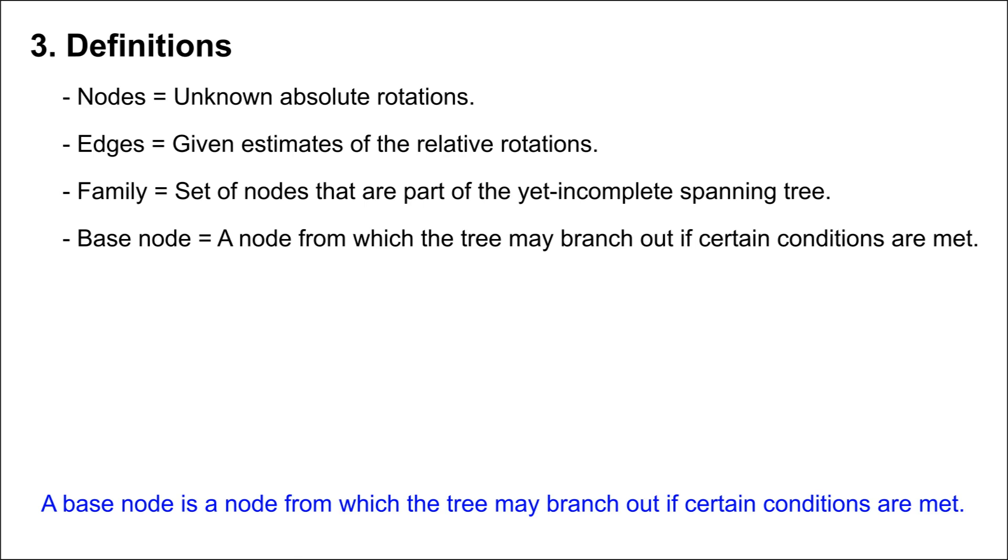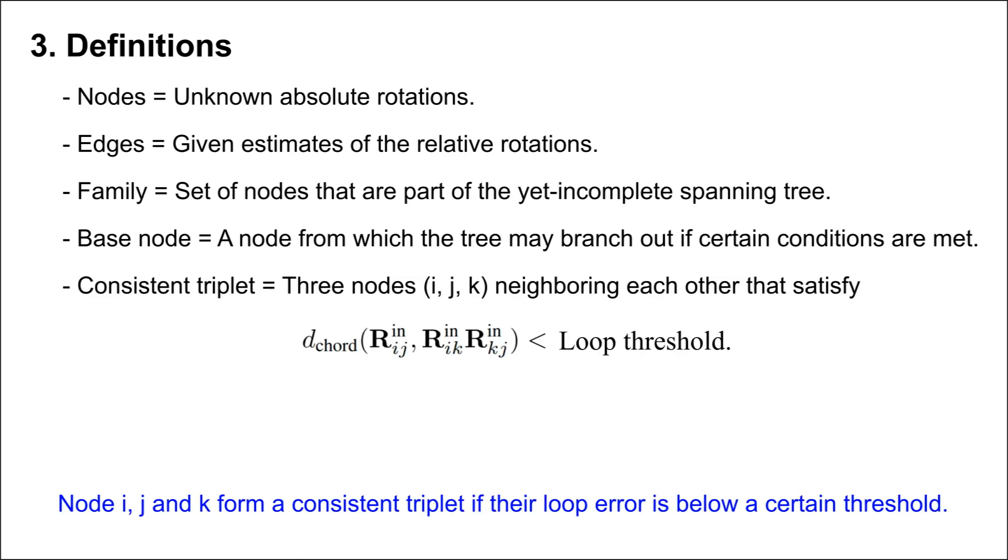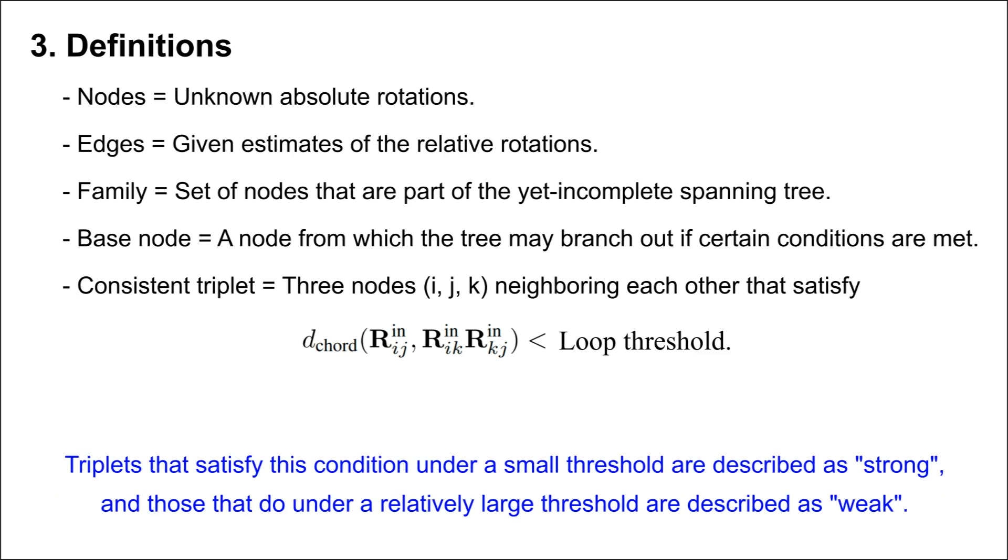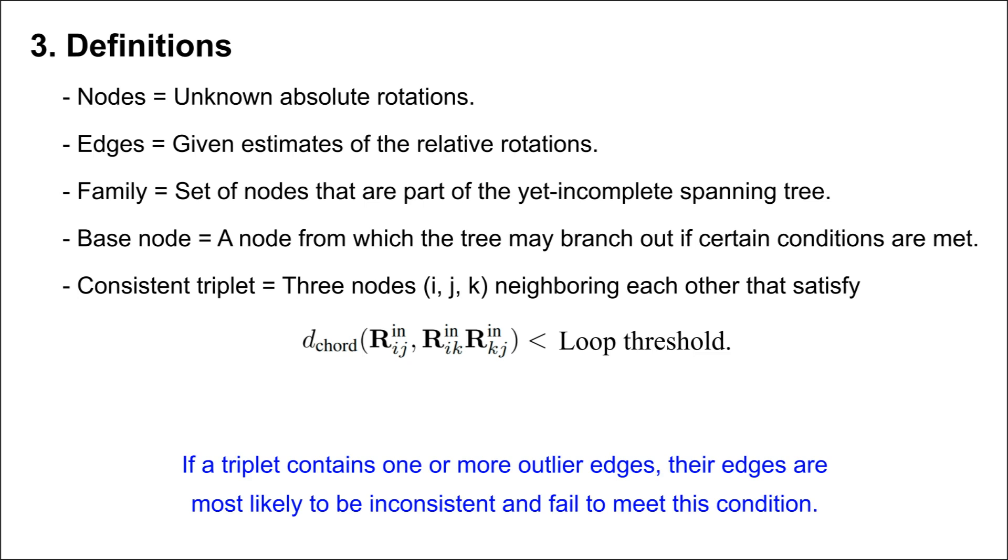A base node is a node from which the tree may branch out if certain conditions are met. Nodes I, J, and K form a consistent triplet if their loop error is below a certain threshold. Triplets that satisfy this condition under a small threshold are described as strong, and those that do under a relatively large threshold are described as weak. If a triplet contains one or more outlier edges, their edges are most likely to be inconsistent and fail to meet this condition.